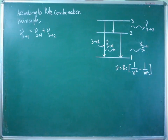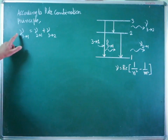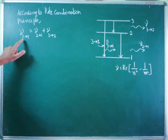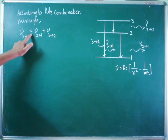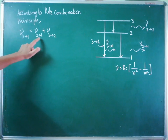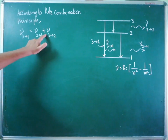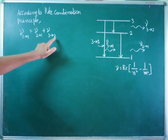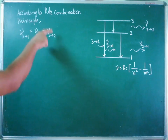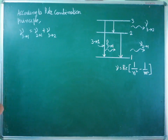The Ritz combination principle states that the frequency of radiation for the transition 3 to 1 is equivalent to the frequency of the transition 2 to 1 plus the frequency of the transition 3 to 2. This is the equation to be proved.